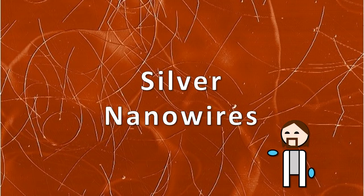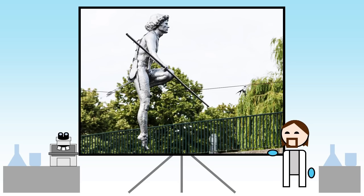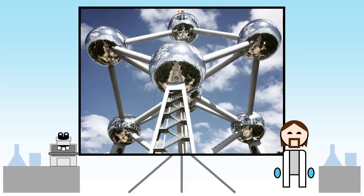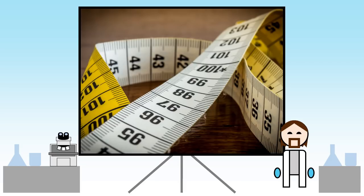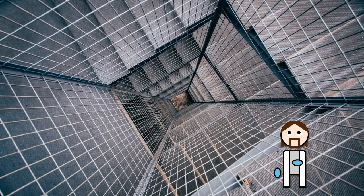As the name suggests, these are incredibly thin wires made up of silver atoms. They are typically anywhere between 10 and 100 nanometers in diameter and about 10 to 100 micrometers in length.